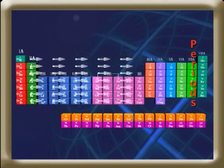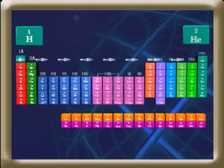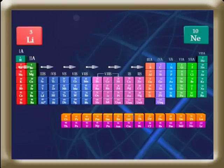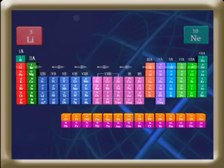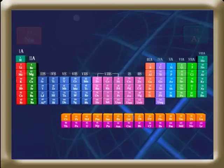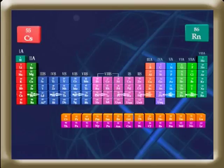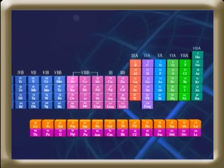There are seven periods in the modern periodic table. Hydrogen and helium are the elements present in the first period. The second period consists of eight elements, from lithium to neon. The third period also consists of eight elements, from sodium to argon. The fourth and fifth periods consist of 18 elements each, the sixth period consists of 32 elements, and the seventh period is an incomplete period.